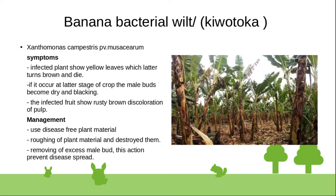Bacterial wilt of banana is caused by Xanthomonas campestris pv. musacearum. Symptoms include yellow leaves which later turn brown and die. In the later stage, the male bud becomes dry and blackened, and infected fruit shows rusty brown discoloration of the pulp.